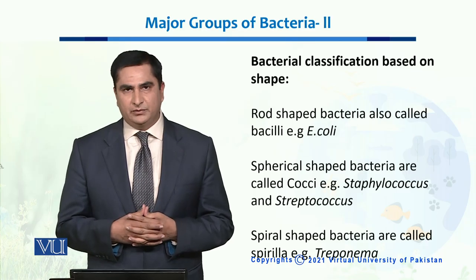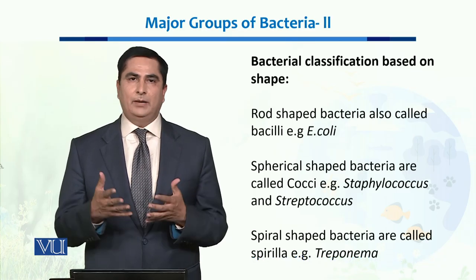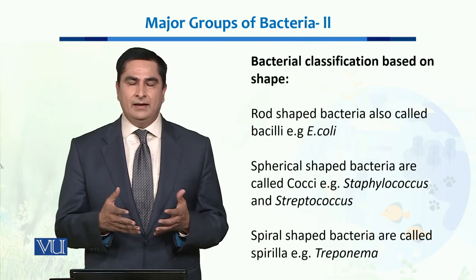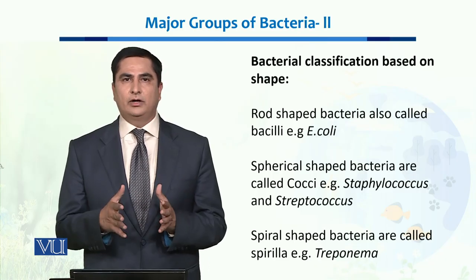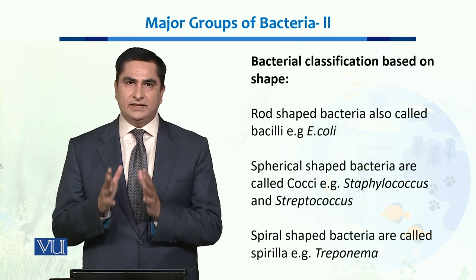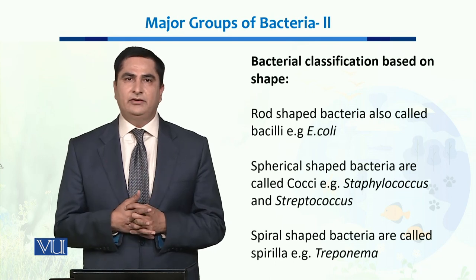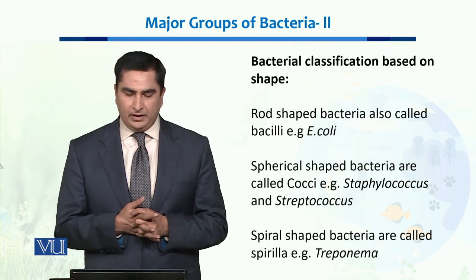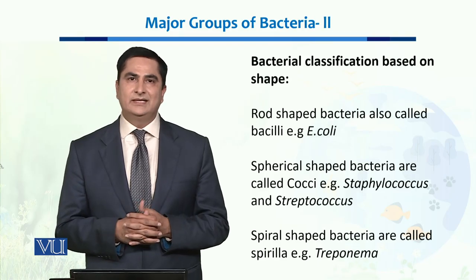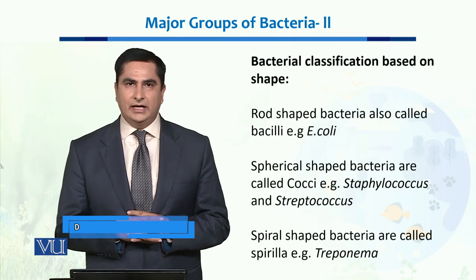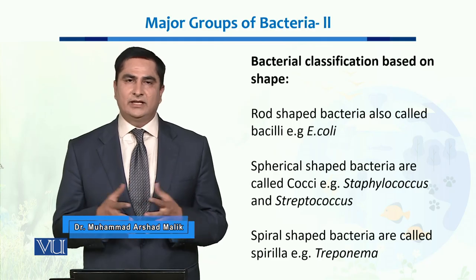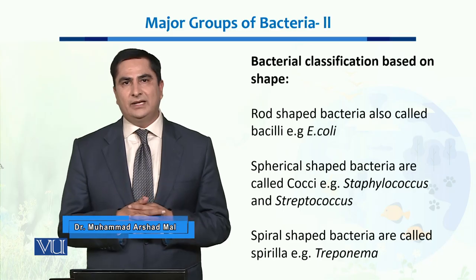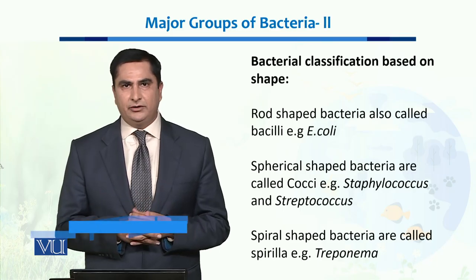When we talk about bacterial classification on the basis of shape, there are three major types. The first type is called rod-shaped bacteria, or bacilli. Bacilli is the plural of bacillus. The most common example of bacilli is E. coli, or Escherichia coli, which is present in the gut of humans.